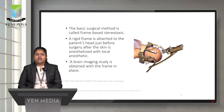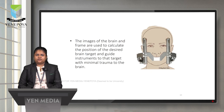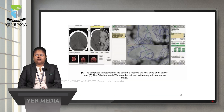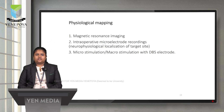The basic surgical procedure starts with frame-based stereotaxis: a rigid frame is attached to the patient's head before surgery after the scalp is anesthetized with local anesthetic. A brain imaging study is obtained with the frame in place. The image of the brain and frame are used to calculate the position of the desired brain target and guide instruments to it with minimal trauma. Next, MRI or CT scans are used to map the brain areas for electrode placement. Then a skin incision is made and small drill holes are drilled in the skull for electrode insertion. This involves a CT scan fused with an earlier MRI and a laser-fused MRI done on a later date.